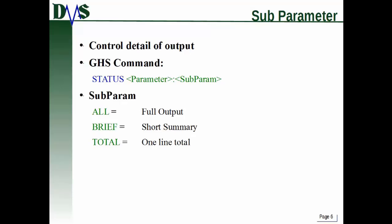There are sub-filters as well. The way you specify a sub-parameter is by separating it with a colon. For a lot of these filters there could still be a lot of information, so you use the sub-parameter to control the level of detail. That also allows you to combine sequential commands one after the other to really customize exactly which pieces of information you want to show. The sub-parameters are always the same: 'all' shows the full output, 'brief' shows a short summary, and 'total' gives one-line totals. This shows up really commonly with tanks specifically.